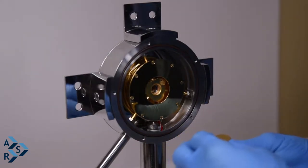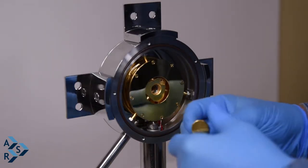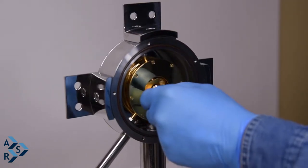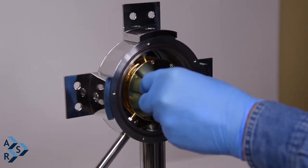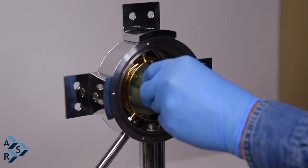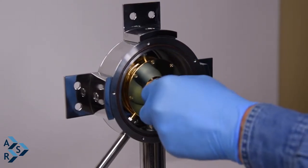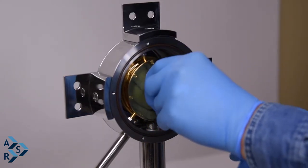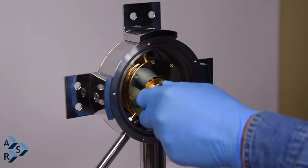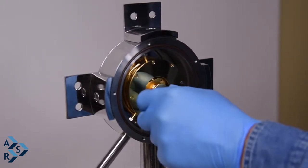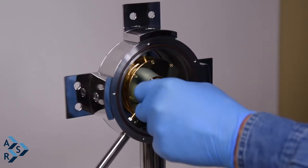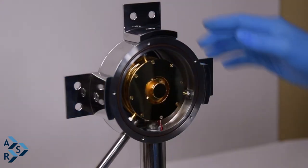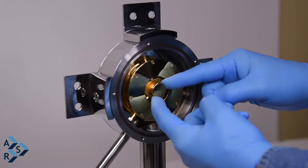I'm using another sample holder, this is for reflectance. Same thing, you can readjust your jam nut. All the threads are right handed threads. Again, you could adjust your height using a caliper. That way then it locks it in place.